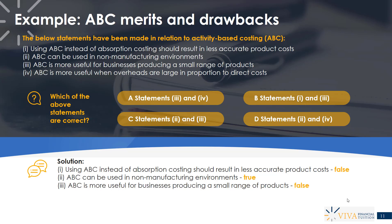Statement three: ABC is more useful for businesses producing a small range of products. No, this is false. Actually, ABC will be more beneficial when a business has a diverse product range — the idea that we produce loads of different products. If we don't have much diversity and we only produce a couple of similar products, they'll place very similar demands on the business. When you have a diverse product range with loads of different production techniques and different requirements, ABC will really reflect the very different demands placed on the business by that varied product range. So that statement is not correct.